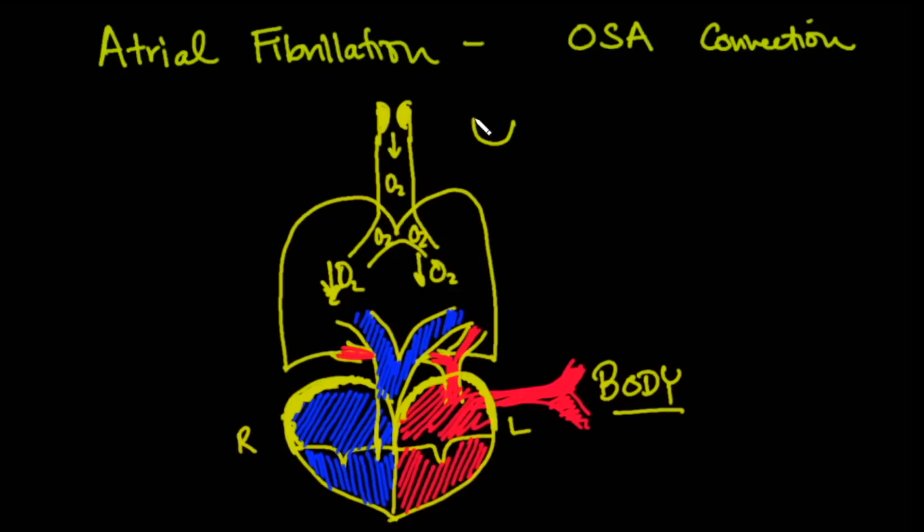Two things happen when that happens. First of all, you have the brain here, and the brain is always signaling and finding out what the oxygen levels are. When the brain finds out that the oxygen levels are going down, it sends nervous signals down to the heart, and it causes the heart to increase in heart rate and also in blood pressure.